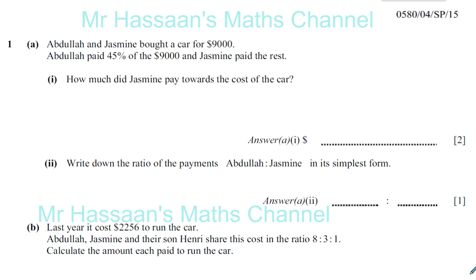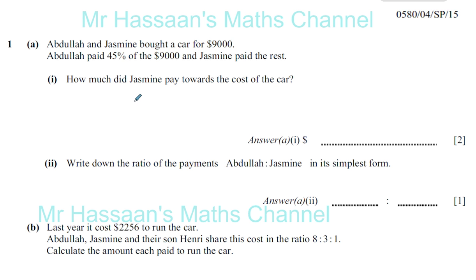Here we have the specimen paper from 2015, paper 4. That's when the syllabus changed to what it is currently and they added a few things like exponential increase and decrease, took away things like stretch and shear, and added things like recurring decimals. There's a question with percentages, ratios, and exponential decrease that didn't come in paper 2 of the 2018 June paper, and I'm guessing some of those types of questions might come up in paper 4, so I thought I'd do this question for the benefit of those taking paper 4 in a few days' time.